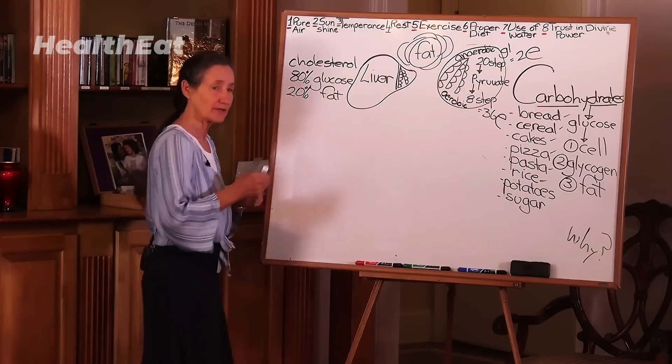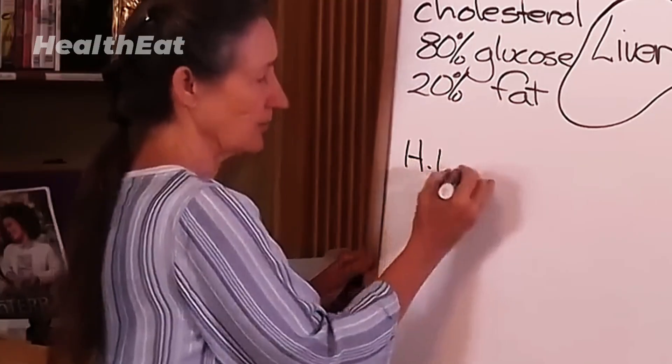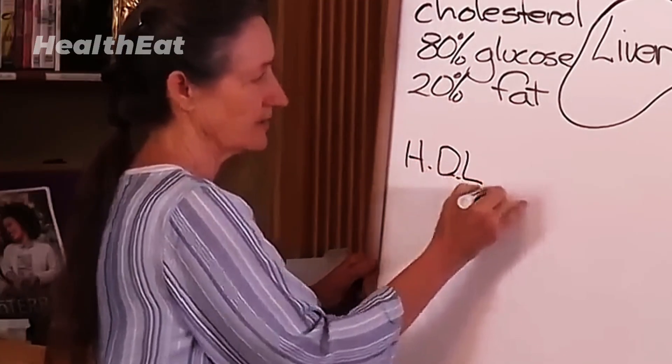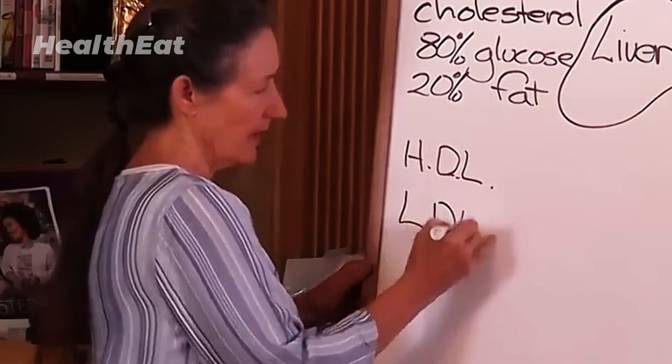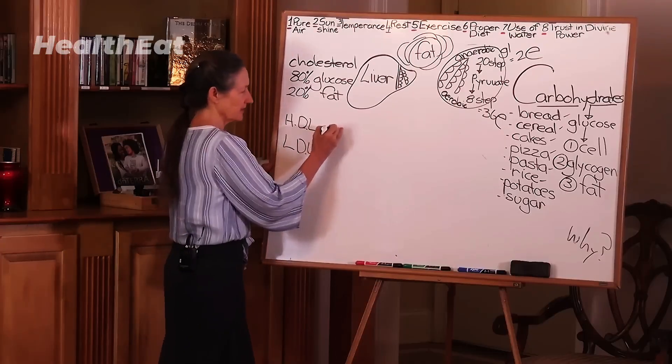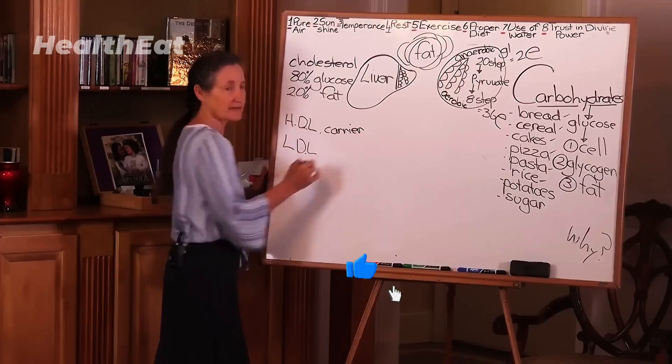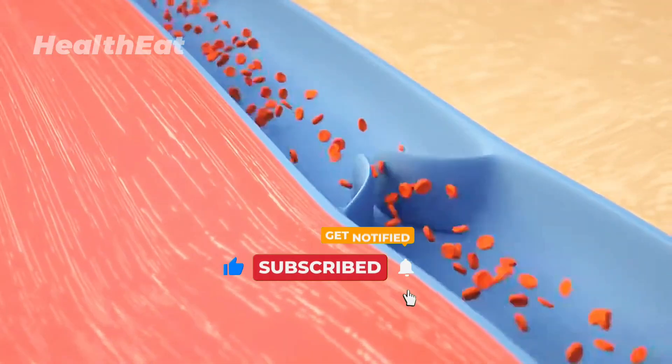So let's have a look at cholesterol. There are two main types. One is high density lipoprotein called HDL, and LDL. HDL is usually called the good guy because it's the carrier. It carries excess cholesterol from the blood back into the liver. That's why it's called the good guy.